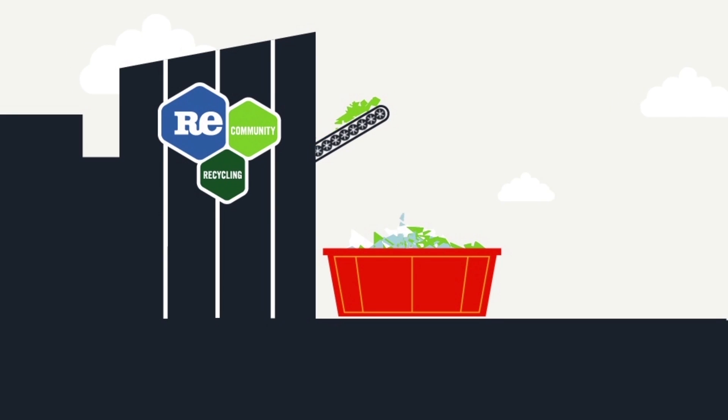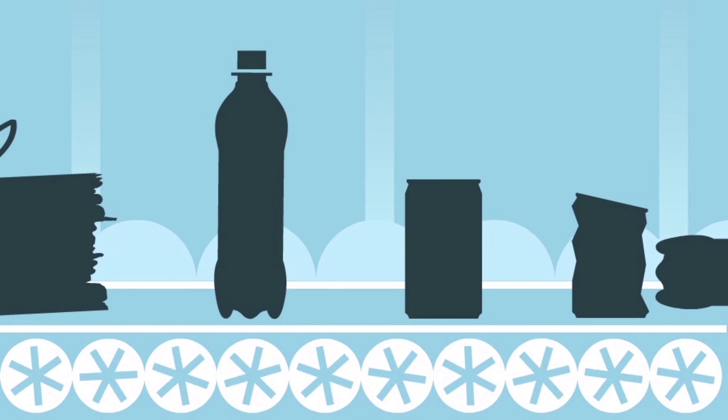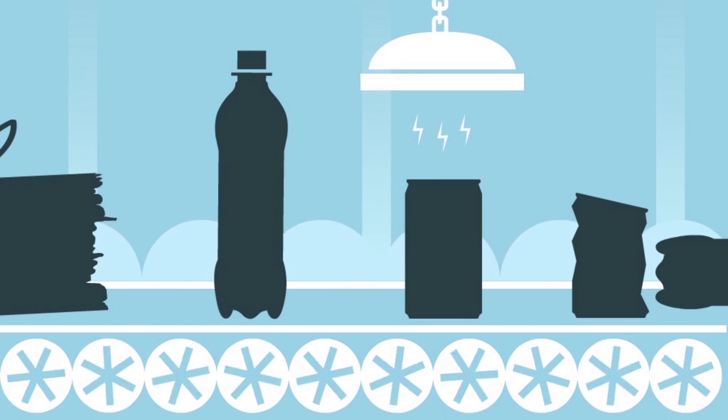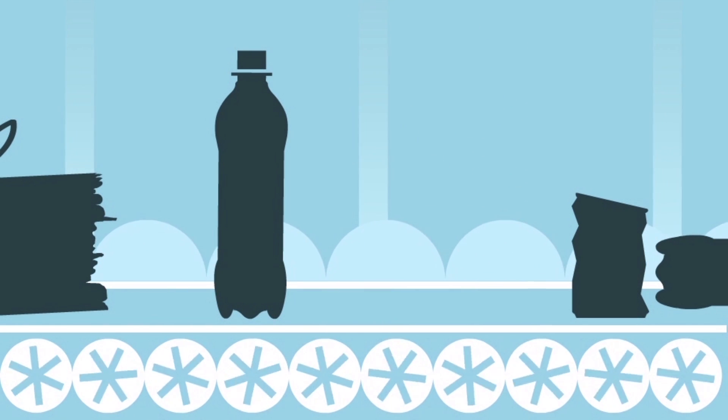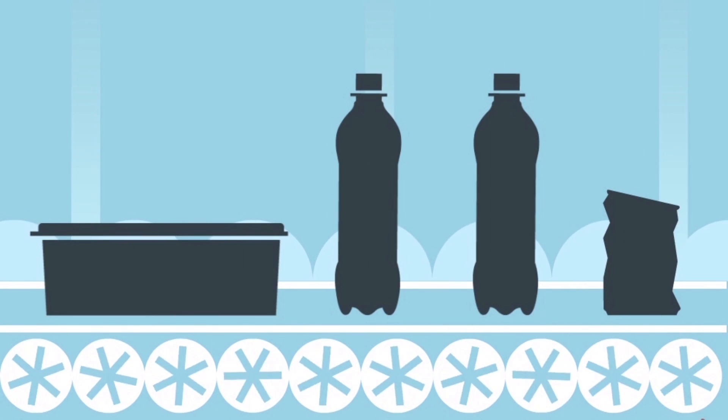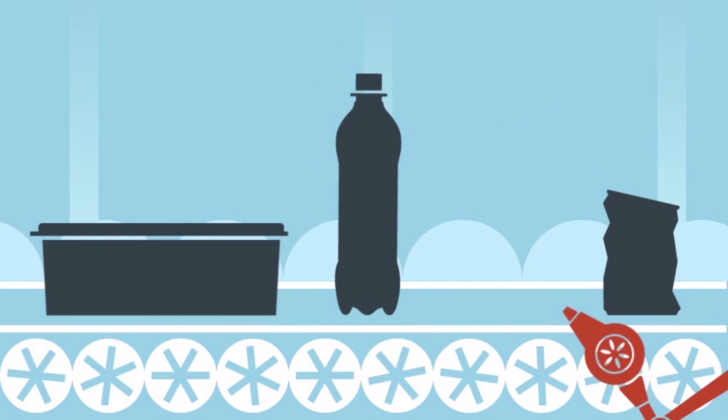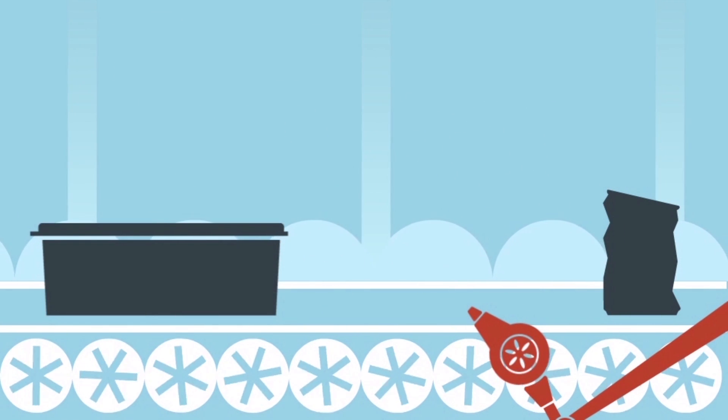At the same time, the rest of the resources continue along another conveyor belt, where steel and tin cans are removed using magnets. Next, optical sorters are used to identify plastic bottles and blow a gust of air to separate them.